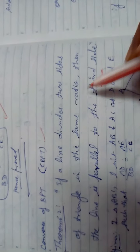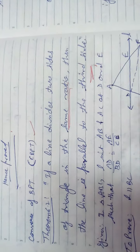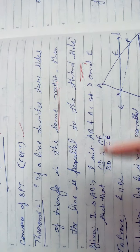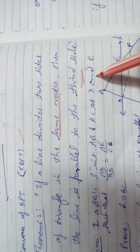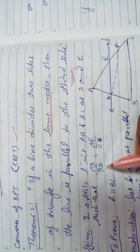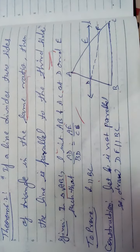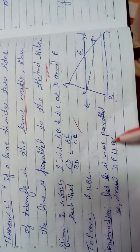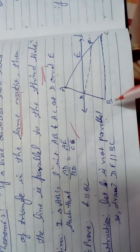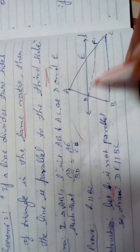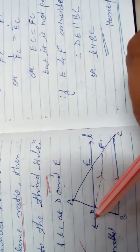In the main theorem, the line being parallel was given; in the converse, the line dividing in the same ratio is given, and we must prove it is parallel to the third side. Construction: suppose L is not parallel to BC, so draw a line DF parallel to BC. Then apply BPT: since DF is parallel to BC, AD/DB equals AF/FC by BPT.